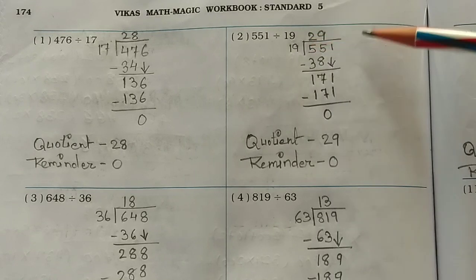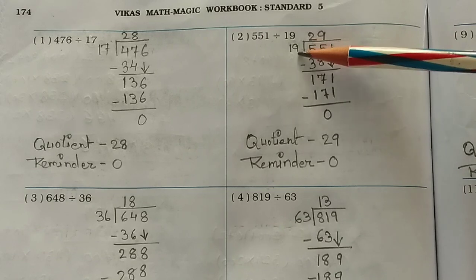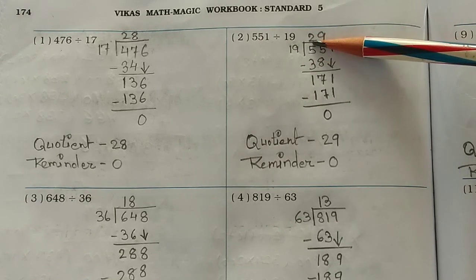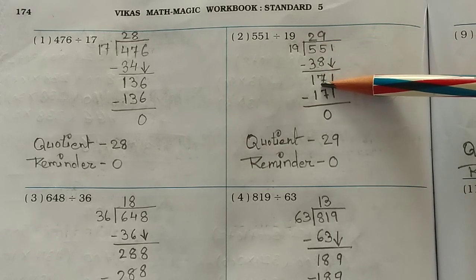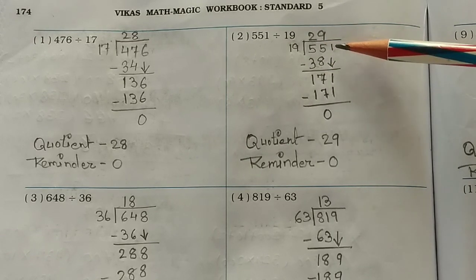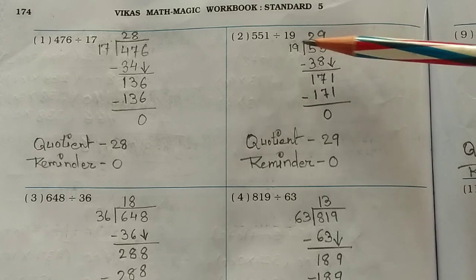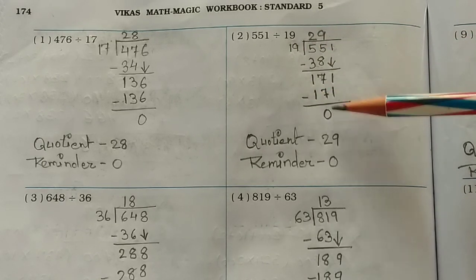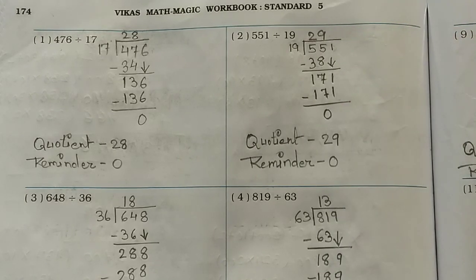Next, 215 divided by 19. Write 19 here. 19 twos are 38 — write 38, subtract from 55 and you get 17. Bring down the 1 to get 171. 19 nines are 171, so after subtraction you get zero remainder and your answer is 29. Write it here.